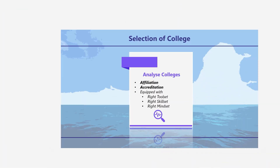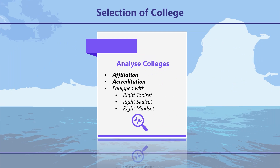How to select a college. First, see the affiliation. Being affiliated to Mumbai University, which has a strong legacy, does matter. Then see the accreditation from national bodies — NAAC, the National Assessment and Accreditation Council, and NBA, the National Board of Accreditation.